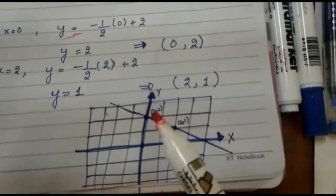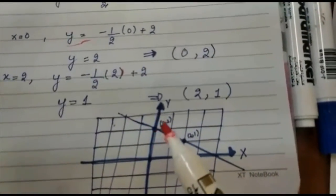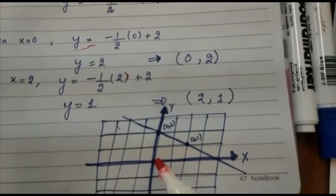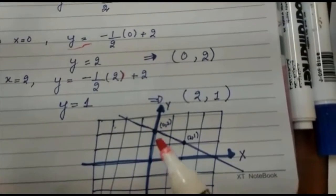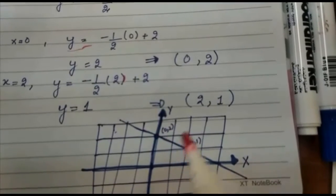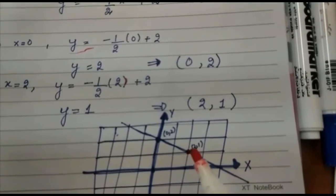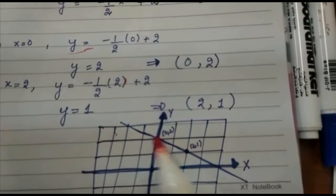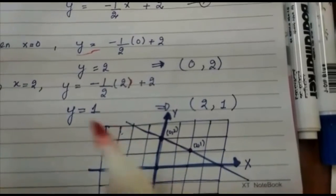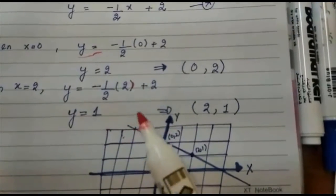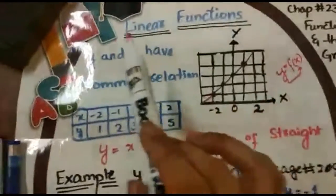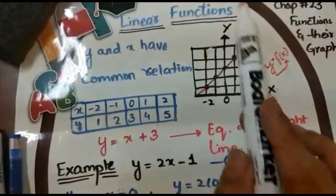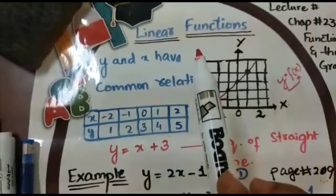Plot the point (0, 2): on the x-axis we have 0 and on the y-axis we move up 2. For (2, 1): move right 2 and up 1. Join these two points to make the line. Linear functions will always give you one straight line.